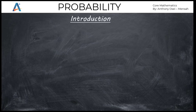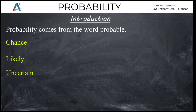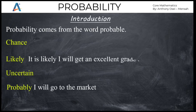What is probability? Probability is a word commonly used in our everyday conversation. It comes from the word 'probable', which also means 'maybe'. Words like chance, likely, and uncertain also have the same meaning as probability. For example, we say 'probably I will go to the market', or 'it is likely that I will get an excellent grade in mathematics'. These statements have degrees of uncertainty — it is not certain whether what is said will happen.